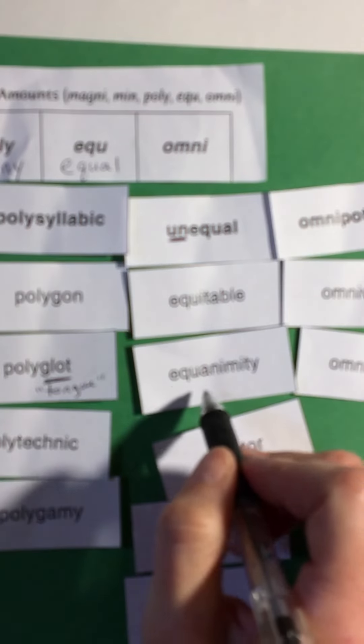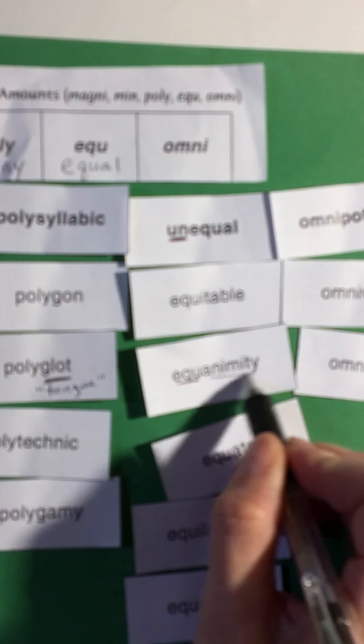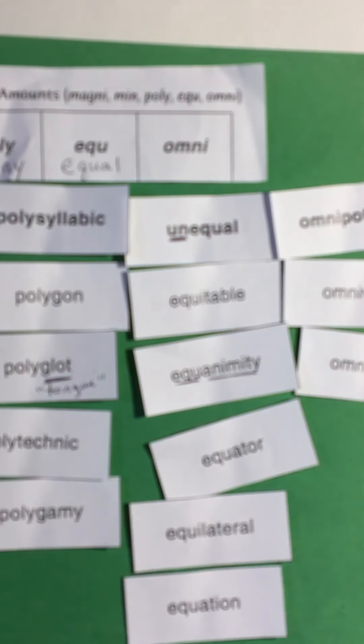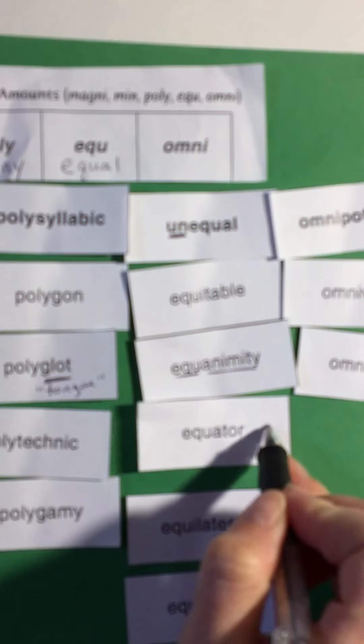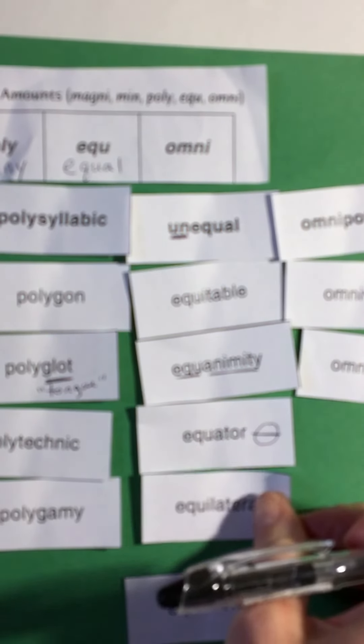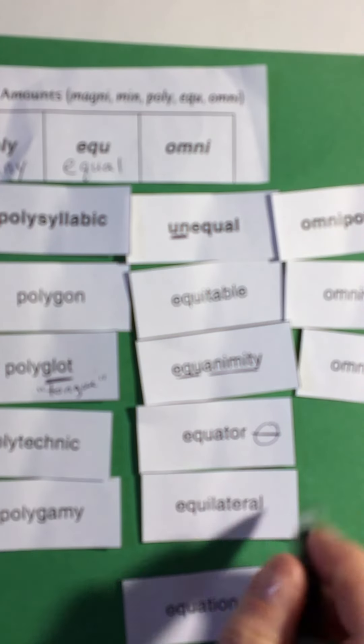Alright, now we have a new word here. So we know this means equal, what does this part mean? It has to do with your temperament and your mind, so you have an equal mind, you're very calm. The equator, the equator that goes in the earth divides the earth into two equal pieces. Equilateral would mean a shape that has equal sides.